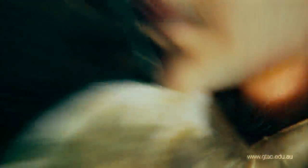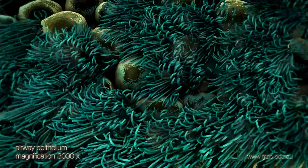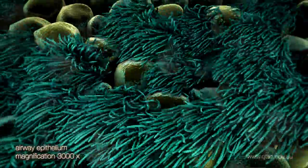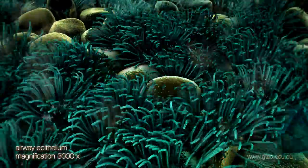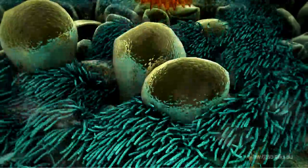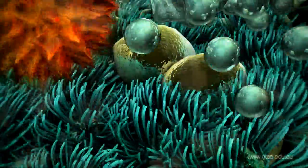The bacteria infect the airways and damage epithelial cells. Some epithelial cells have brush-like cilia that beat in a coordinated fashion. Other epithelial cells, called goblet cells, produce mucus.